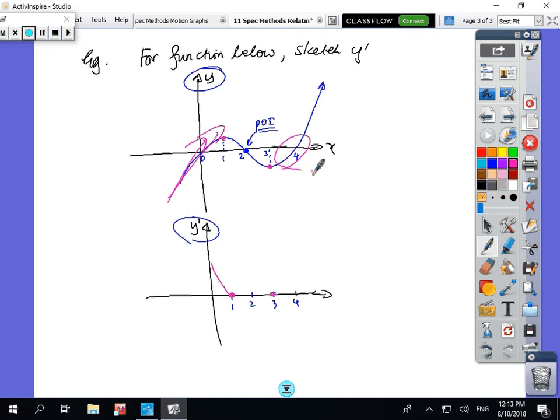The gradient is positive, so it must be positive numbers. Here, the gradient is negative, so we must have negative numbers. It looks something like that.